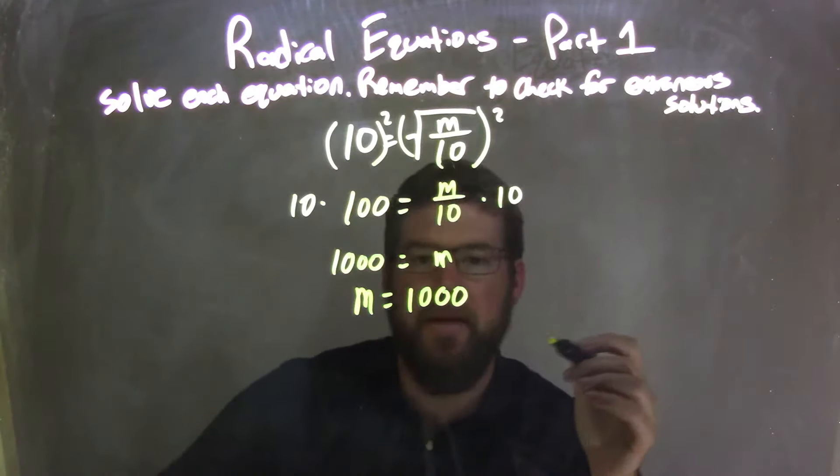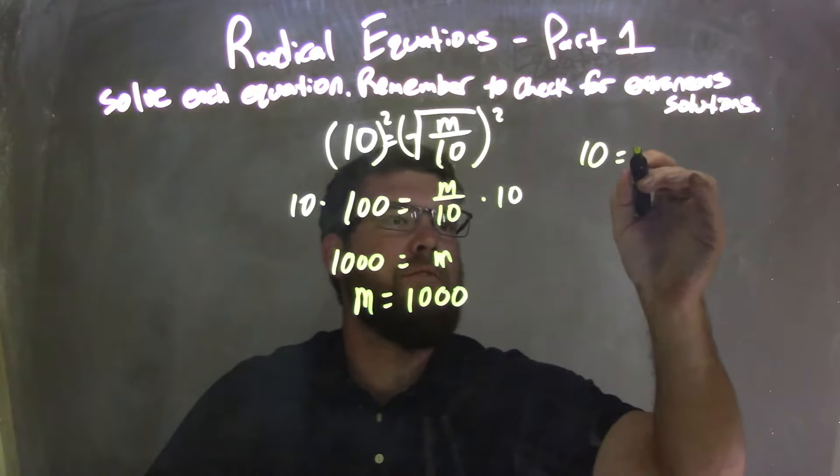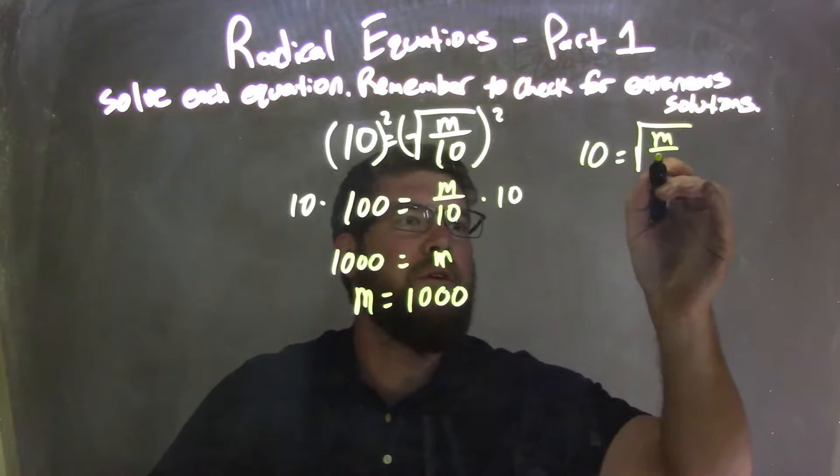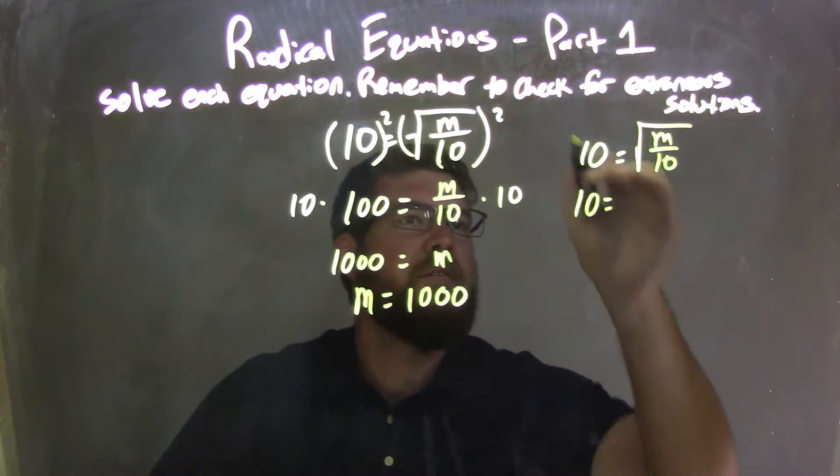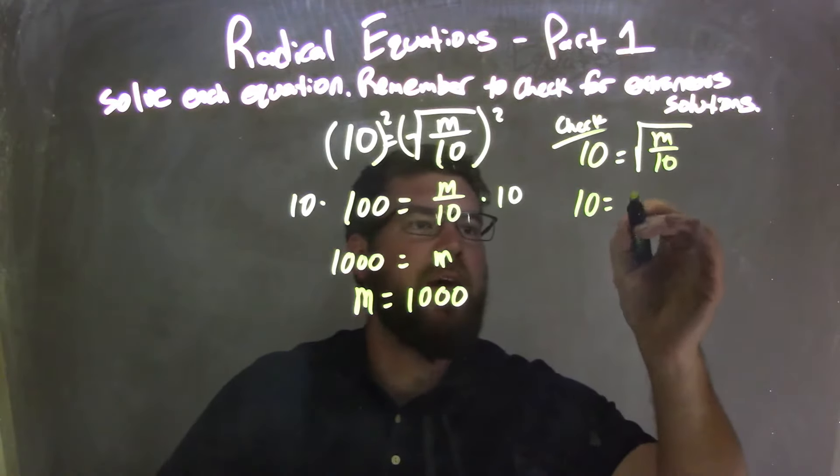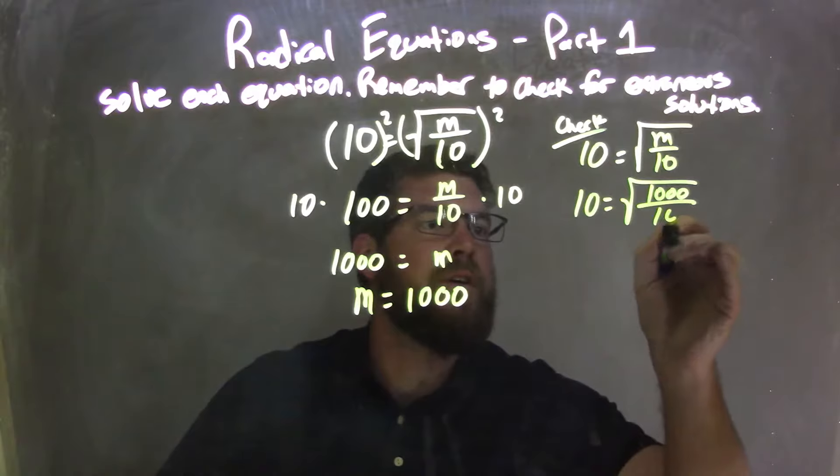Well, now I need to check that. So to check that, I'm going to take my original equation, 10 equals the square root of m over 10, and I'm going to plug 1,000 into it. So I have 10, this is my check, 10 equals the square root of 1,000 all over 10.